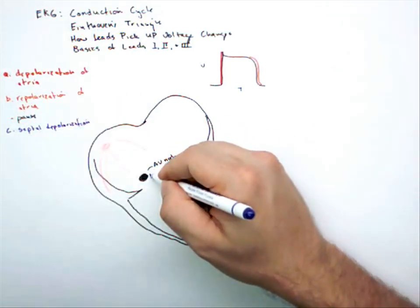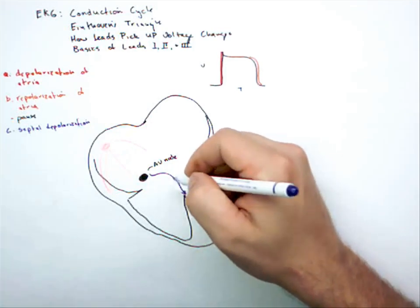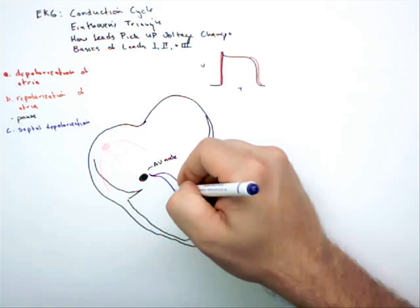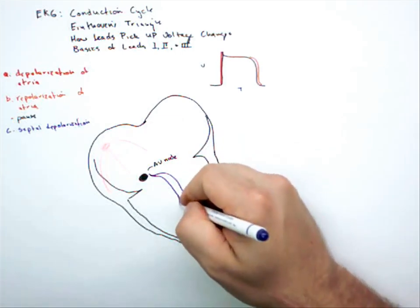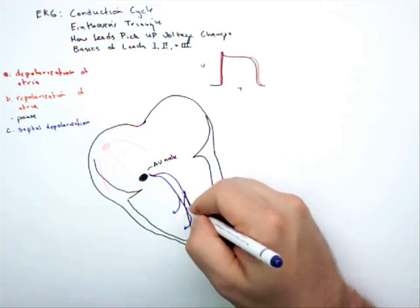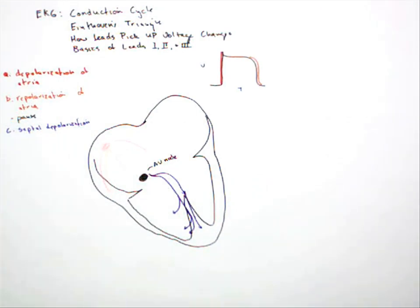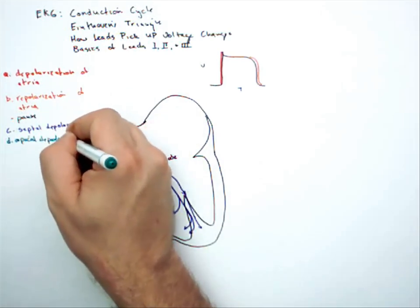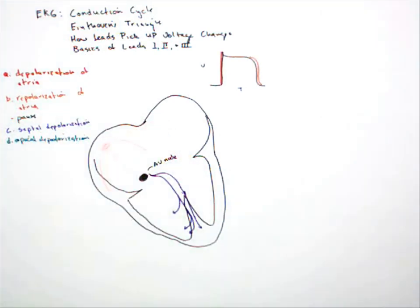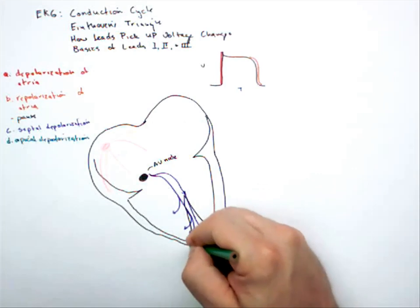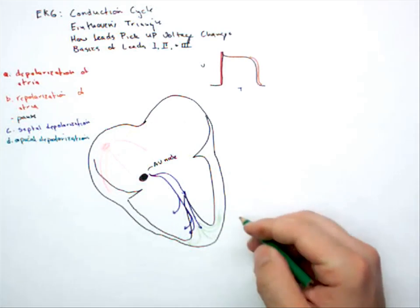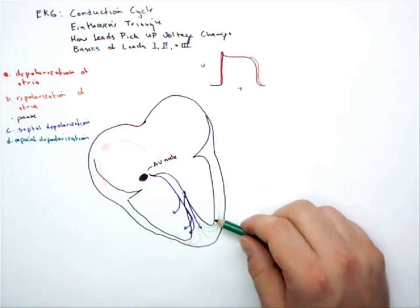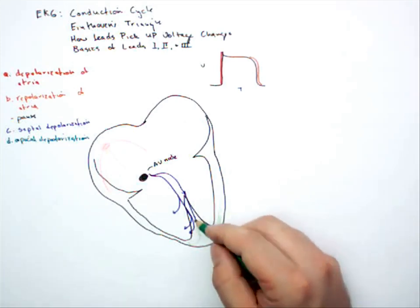There's what's called a left bundle branch and a right bundle branch, and we're going to depolarize the septum. Next up is something called apical depolarization. This is when we're depolarizing the apex. Remember that the left side of the heart is much thicker than the right, so most of the voltage is going to go up to the left — that's why I've drawn more arrows here.